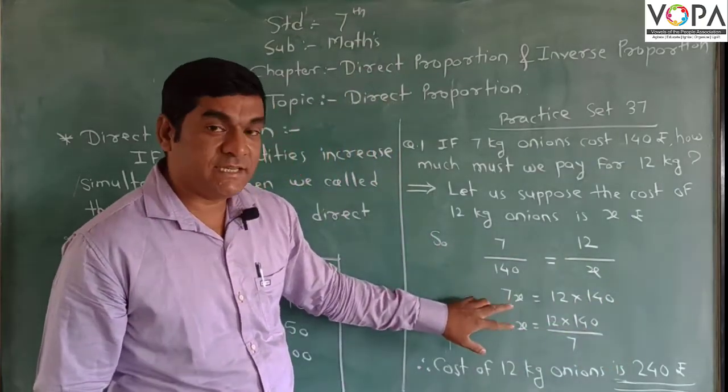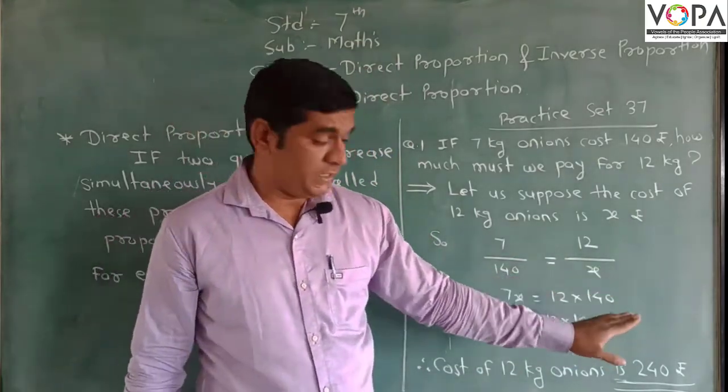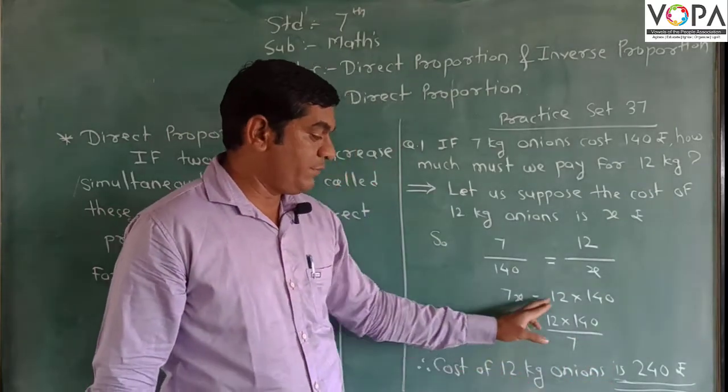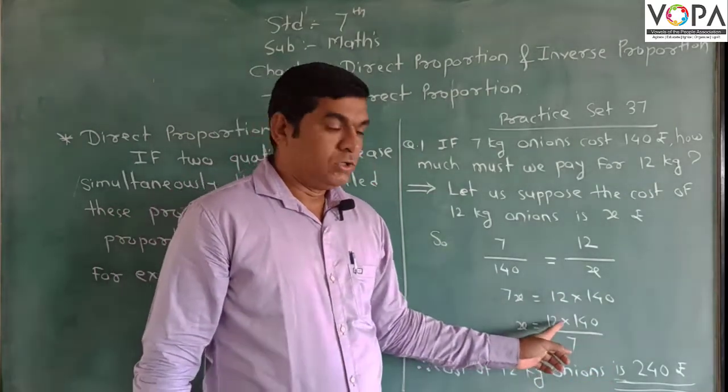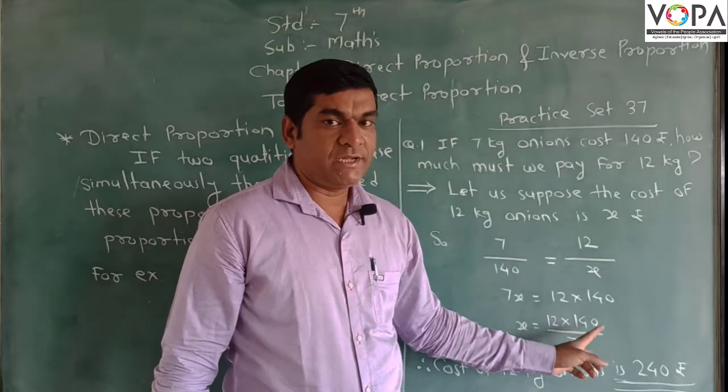Now 7 is multiplied, so after going to this side it divides. Then the equation becomes x is equal to 12 into 140 upon 7.